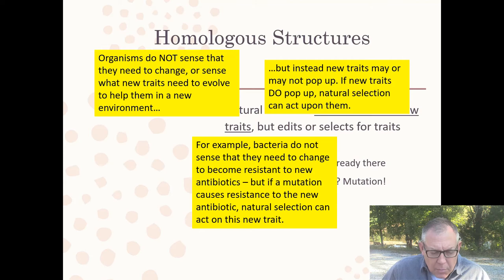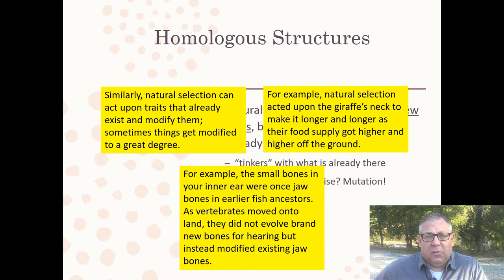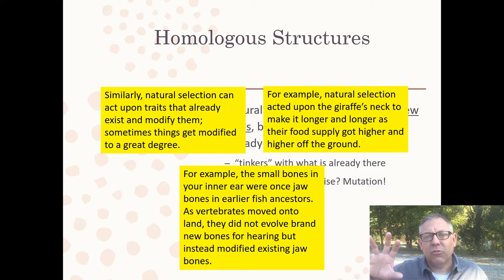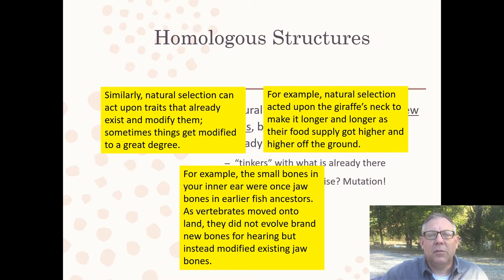Natural selection doesn't always have to wait for mutations or new traits to pop up. There are existing structures that can be modified — that's the tinkering part. Sometimes things get modified to a great degree: you start with a particular structure, the environment changes, and through natural selection that structure can get greatly modified and put to a completely different use than what it was originally used for. That's taking something that exists, tinkering with it, and ending up with something new.